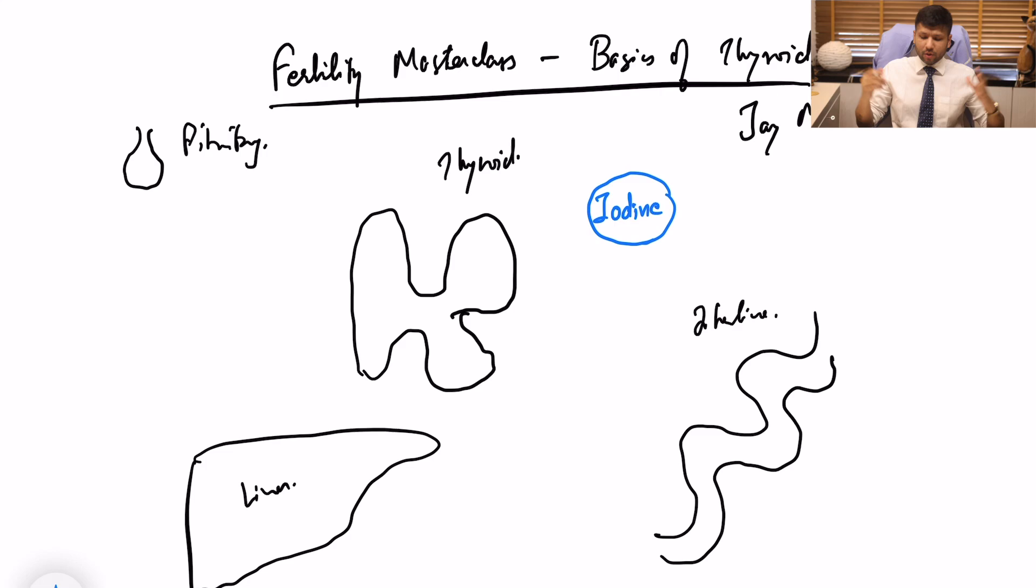Now whenever we eat food, let's say iodide supplementation or iodine rich salt or whatever, it gets absorbed from the intestine in the form of iodide and on the thyroid there are receptors. Now these receptors are basically induced by TSH, thyroid stimulating hormone. So what it does is it allows for uptake of iodide to go inside the thyroid from the blood.